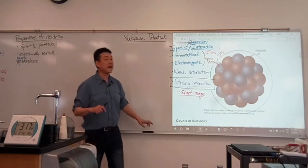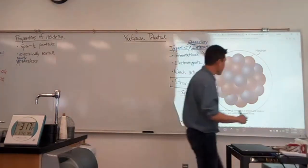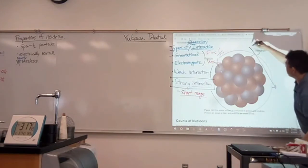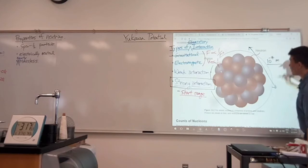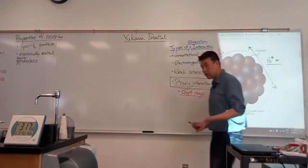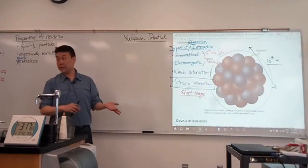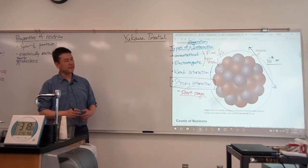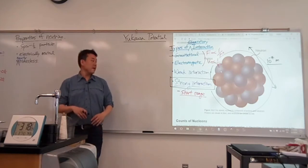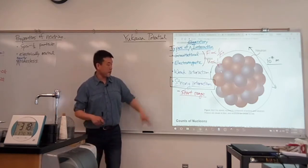So let's just be more specific. We know the typical size of nucleus. Typical size of nucleus is about 10 to minus 14 meters, about 10,000 times smaller than size of an atom. So this is short range.